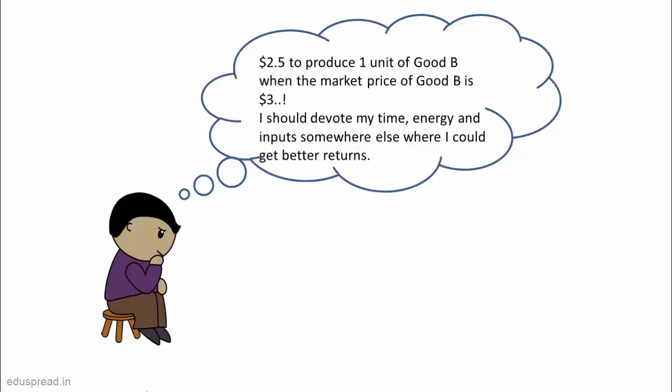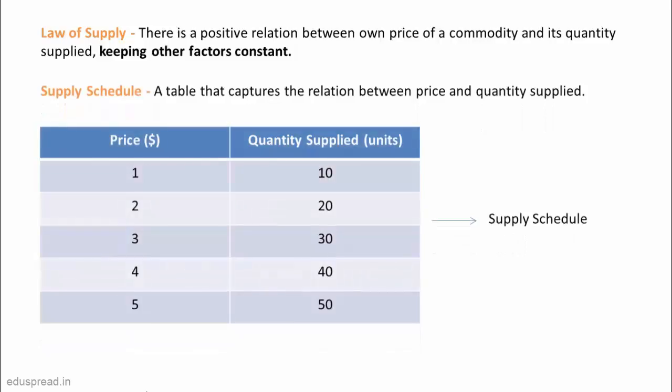So while discussing the law of supply, we assume all the other factors that may affect the quantity supplied by a seller to be constant. After discussing the law of supply, let us now discuss supply schedule and supply curve. Just like a demand schedule, a supply schedule is a table showing different quantities supplied by a firm at different prices of a good.